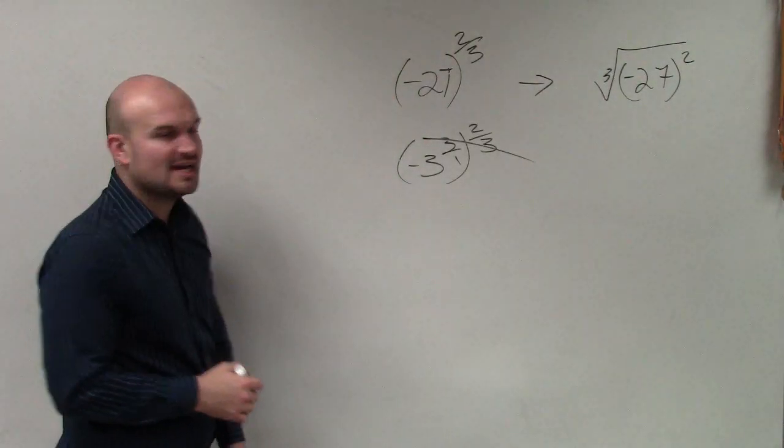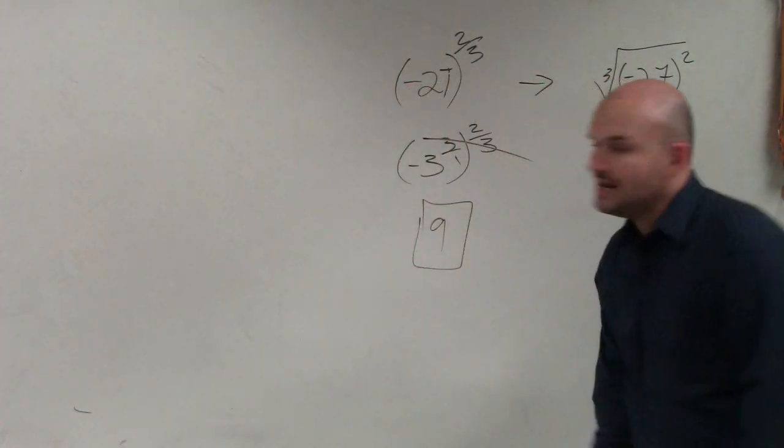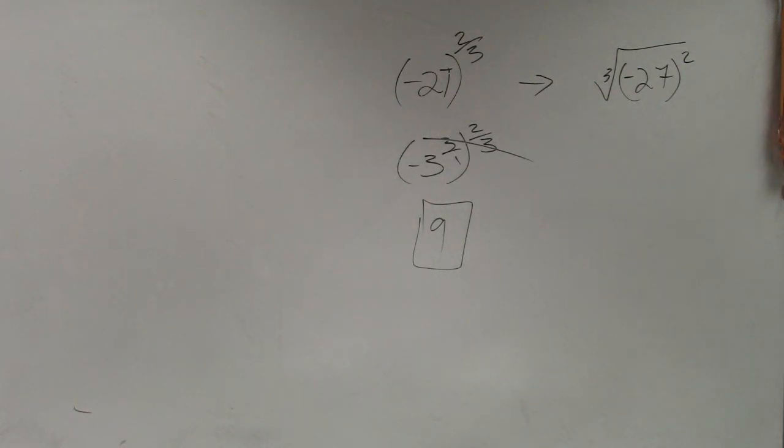So guess what? Those cancel out. You're left with negative 3 squared, which is 9. Done. If you prefer to use a calculator...